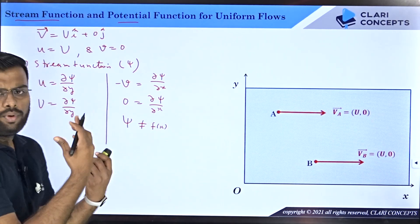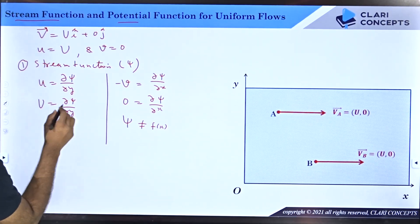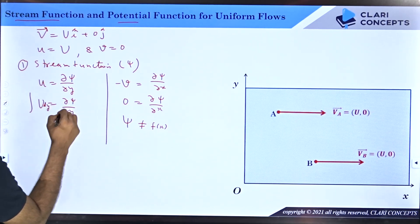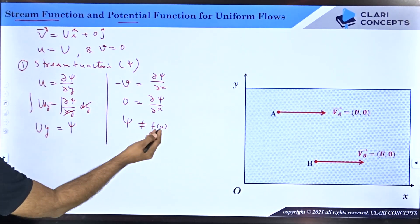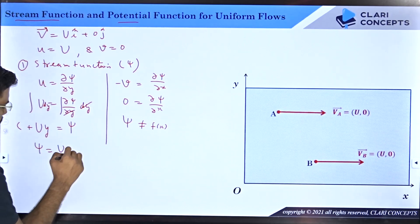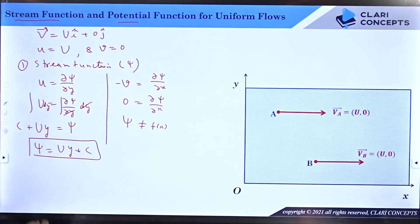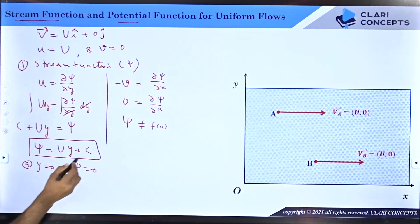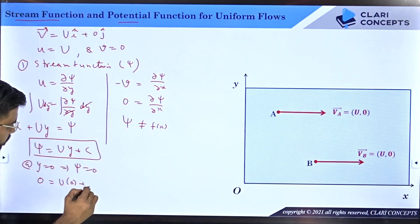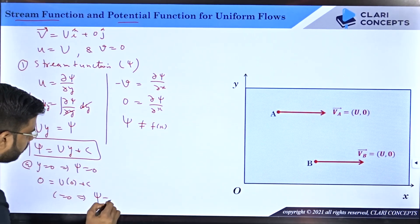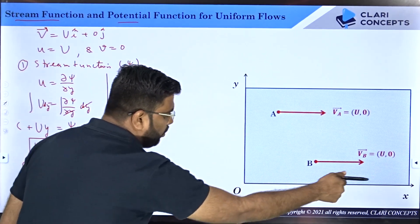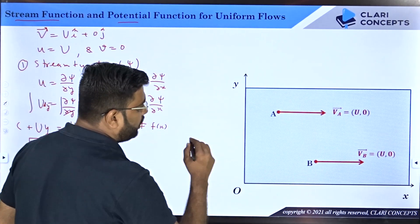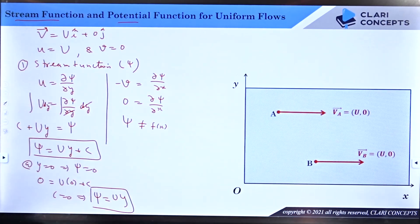That means there will be no value of x in psi. Integrating U = ∂ψ/∂y with respect to y gives ψ = Uy plus a constant c. If we say the stream function equals zero at y = 0, substituting gives c = 0. Therefore, the stream function is ψ = Uy. This means that at constant values of y, the stream function lines are parallel to the x-axis.